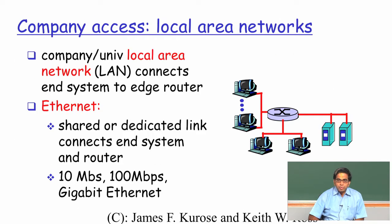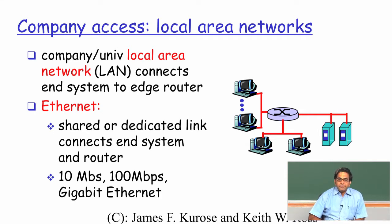For non-residential network access, you typically have a LAN network, which most people are familiar with, and is based on Ethernet. With Ethernet, you have a shared or dedicated link connecting end systems and the router. Speeds can be 10 Mbps, 100 Mbps, gigabit, and today it is also becoming common to have 10 Gigabit Ethernet LAN backbones.